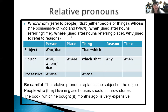Relative pronouns: 'who' and 'whom' refer to people. 'What' refers either to people or things. 'Whose' is the possessive of whom and which. 'When' is used after nouns referring to time. 'Where' is used after nouns referring to place. And 'why' is used to refer to reasons. There is a little chart here to help you remember and memorize the relative pronouns better.